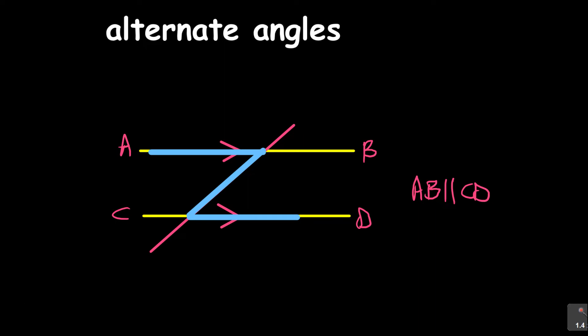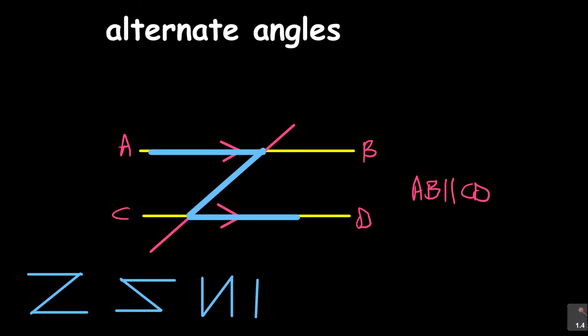Whenever we're talking about alternate angles, that is what I'm bringing to attention. You are looking for a shape that is in the form of Z. So it can look like this, it can look like that — it's still a Z. It can look different orientations, it's still a Z. It's more of a Z and an N — you've got a Z and an N that is inverted in a way.